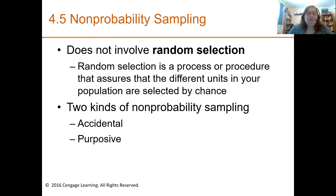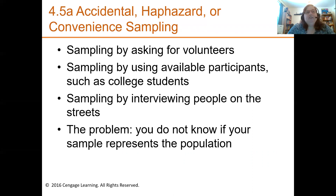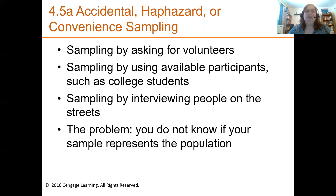There are two kinds of non-probability sampling: accidental and purposive. Accidental — think of haphazard or convenience sampling. You can ask for volunteers, use whoever's available such as college students, or interview people on the street. The problem is you don't know if your sample represents the population of interest. It's convenient, but it may not be ideal in terms of external validity. I don't want to demonize it — I just want to point out that if you're going to do this kind of sampling, you may have this kind of issue.